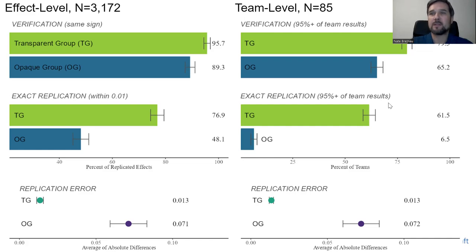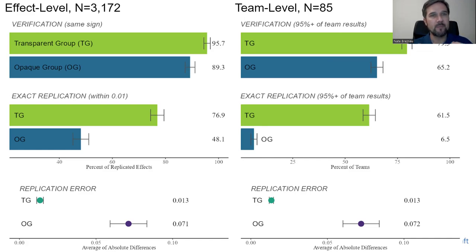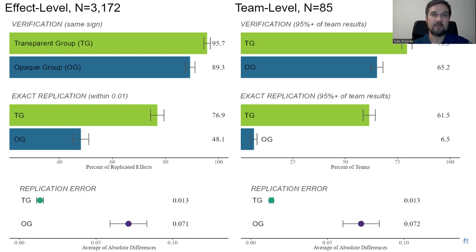At the team level, results are less strong. 79.5% of the 85 teams were able to verify 95% or more of all results — meaning there's a little bit of error in a lot of teams. The opaque group was less successful, and when it came to exact replication, almost nobody in the opaque group could produce the same numerical results. The opaque group had only a method section describing the results and the directionality of coefficients, although it did describe how to construct the models.